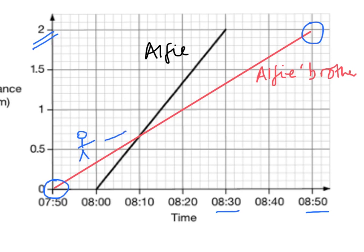We're looking at when the two lines cross, because here's Alfie leaving later. At 10 past 8, Alfie's line — the black line — crosses the red line. Alfie moves quicker because his line is steeper, and they cross at 10 past 8. So that will be the answer.